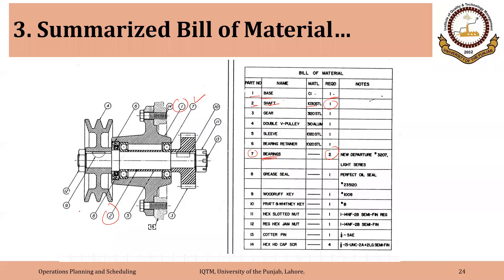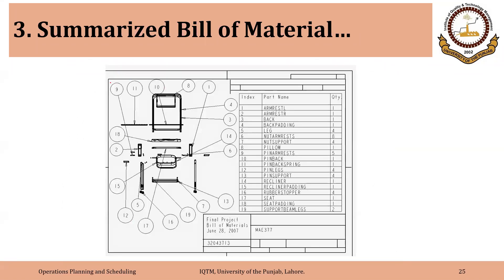At number eight, there is a grease seal with a quantity required of one, and at number fourteen, there is a screw with a quantity required of four. The listing includes the material specified, notes, and quantity. But when the component is to be made for the higher-level assembly, that relationship is not shown. On engineering drawings, the parts are numbered, their description is given, and the quantity is mentioned.